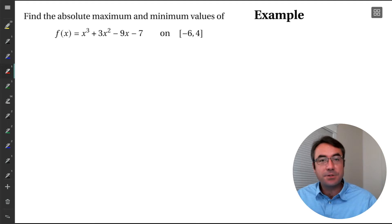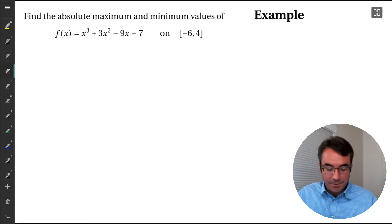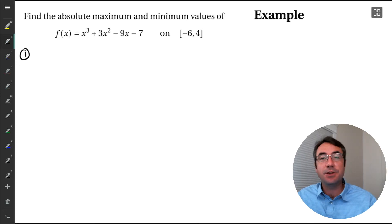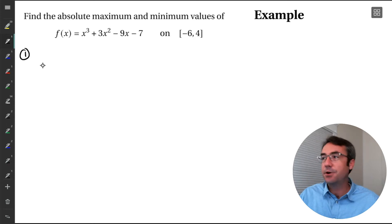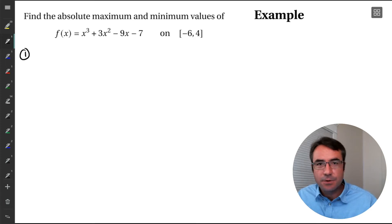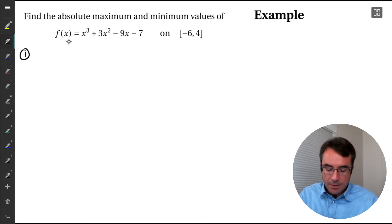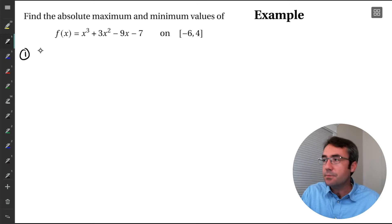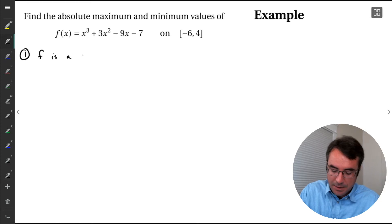The first step for our closed interval method is to verify: is our function continuous, and are we dealing with a closed interval? This function is continuous — it's a polynomial. There's no division by zero, no square roots of negatives, no natural logs or things that normally give us issues. So our function f is a continuous polynomial.